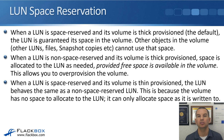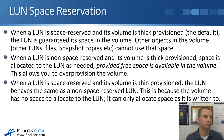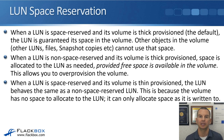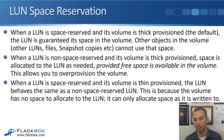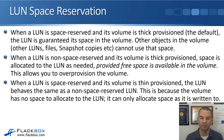When you have a thick provisioned volume with thin provisioned LUNs — say the volume is 1TB — you could have four 500GB LUNs in there, provisioning more space to your LUNs than is available in the volume. When a LUN is space-reserved and its volume is thin provisioned, the LUN behaves the same as a non-space-reserved LUN, because the volume has no space to allocate to the LUN upfront.